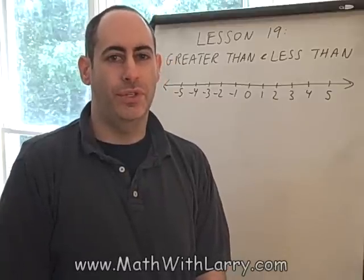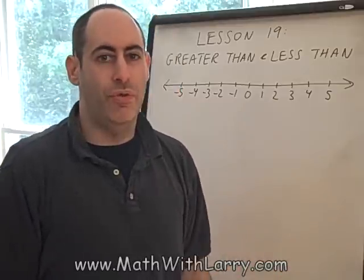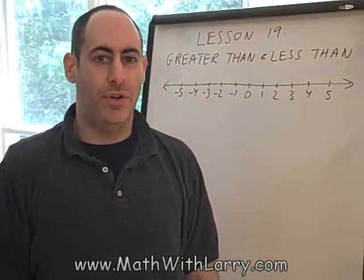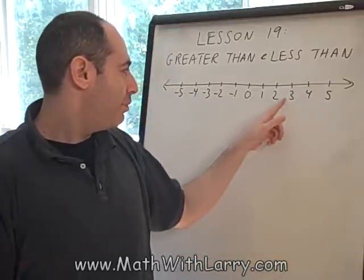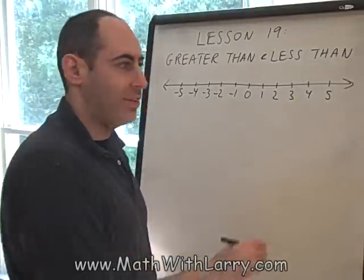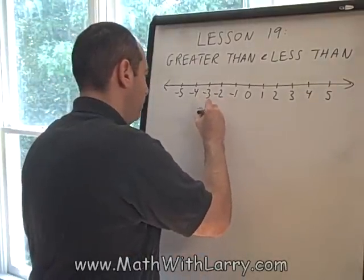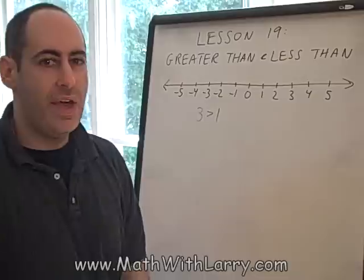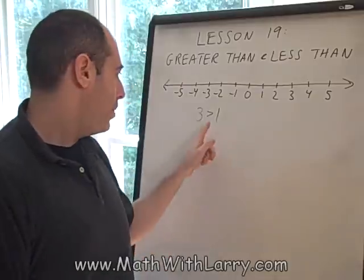For this example, I want to know if 3 is greater than 1. Now, of course, we know that it is, but the way we can figure that out on a number line is seeing that 3 is to the right of 1. Using symbols, we can write that like this.